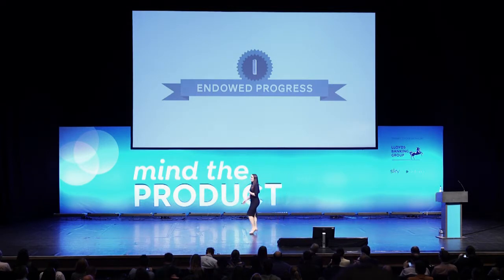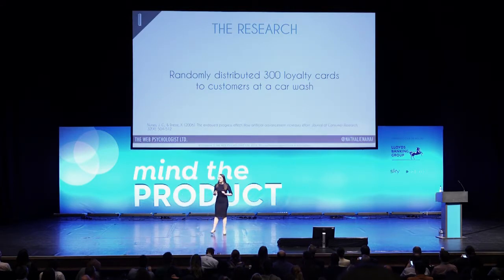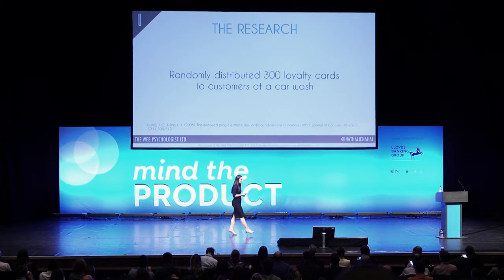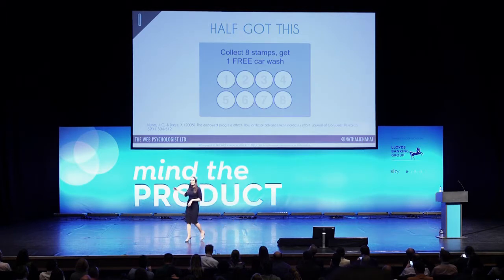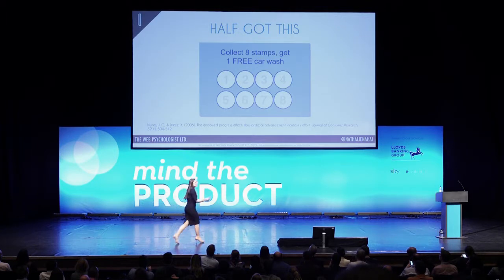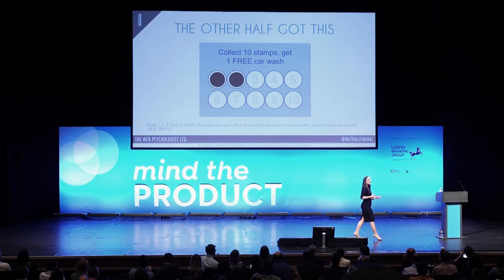The first principle I'd like us to look at is endowed progress. Two psychologists randomly decided to distribute 300 loyalty cards to customers at a car wash. Half of them got this — group A gets eight stamps to get a free car wash. The other group gets 10 stamps to get a free car wash, but when they hand you the card, you've already got two punched out.